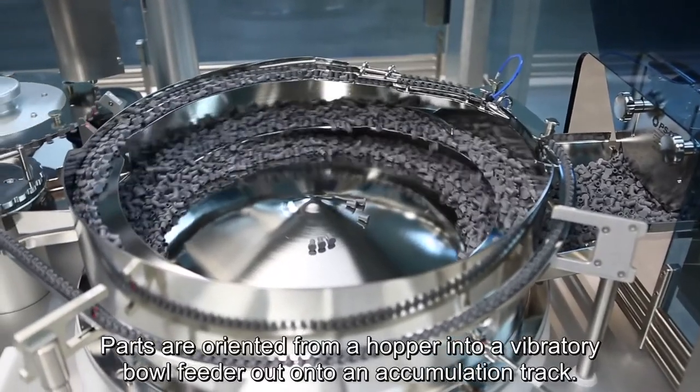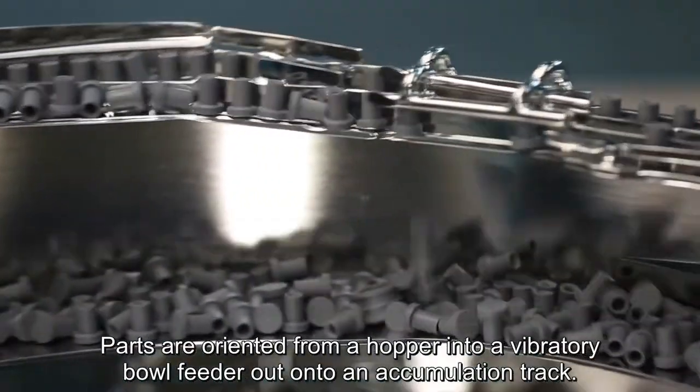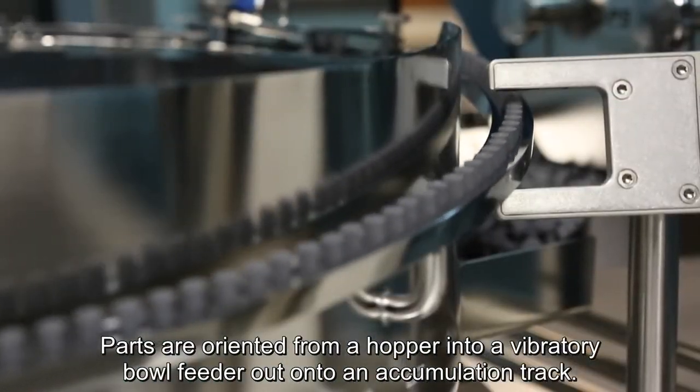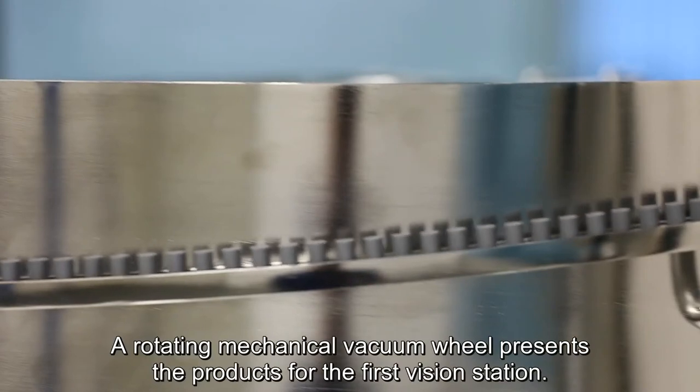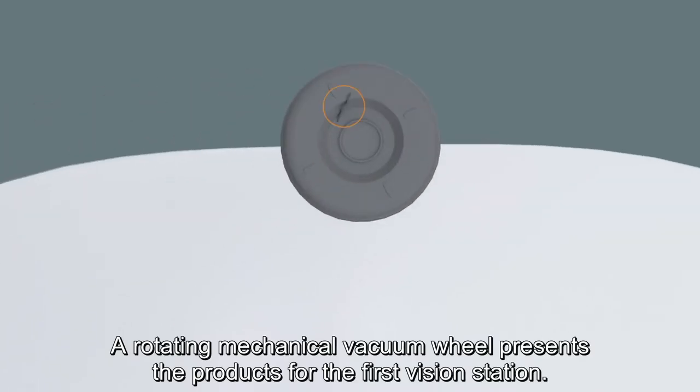Parts are oriented from a hopper into a vibratory bowl feeder out onto an accumulation track. A rotating mechanical vacuum wheel presents the products for the first vision station.